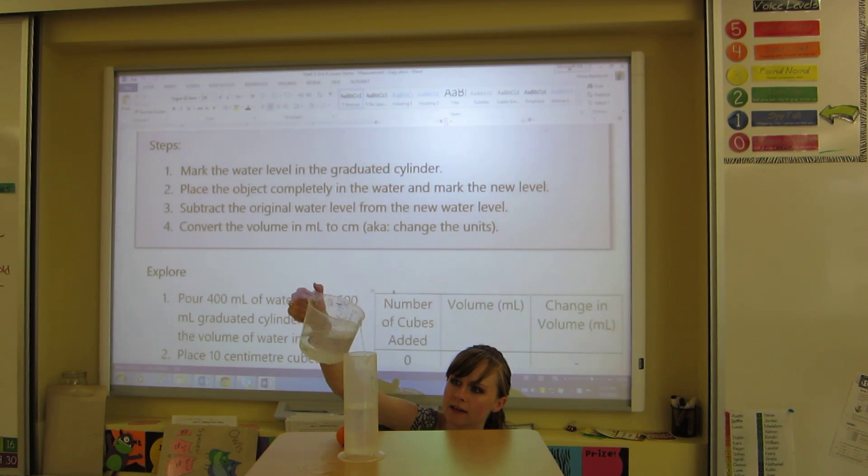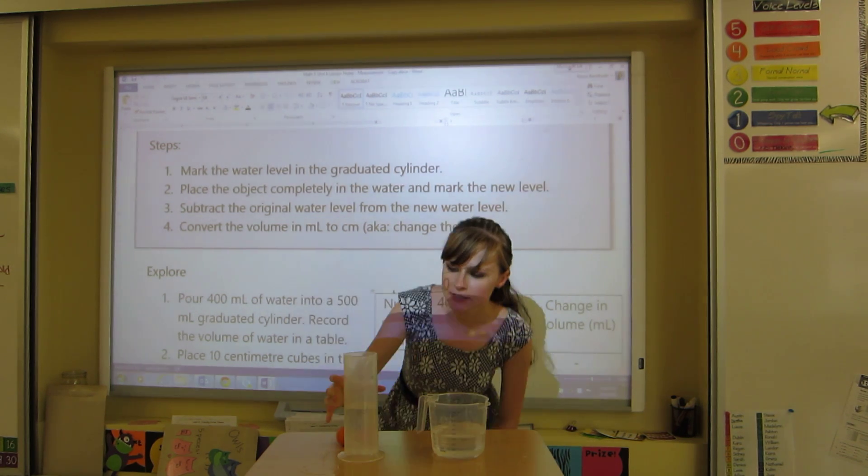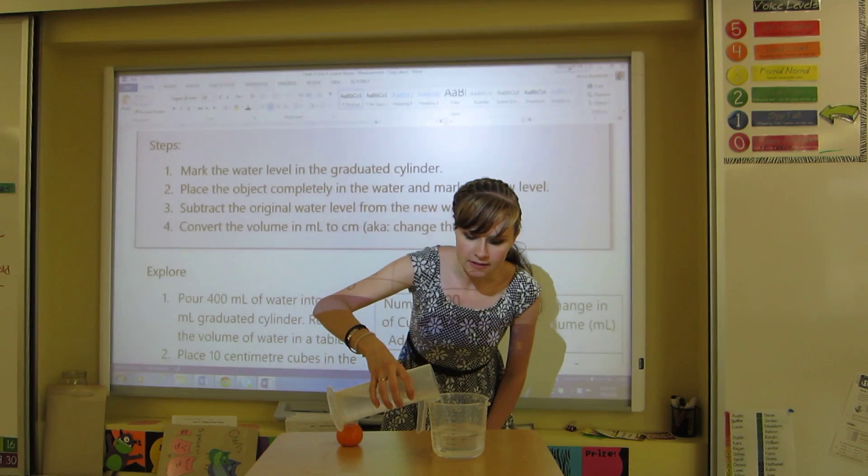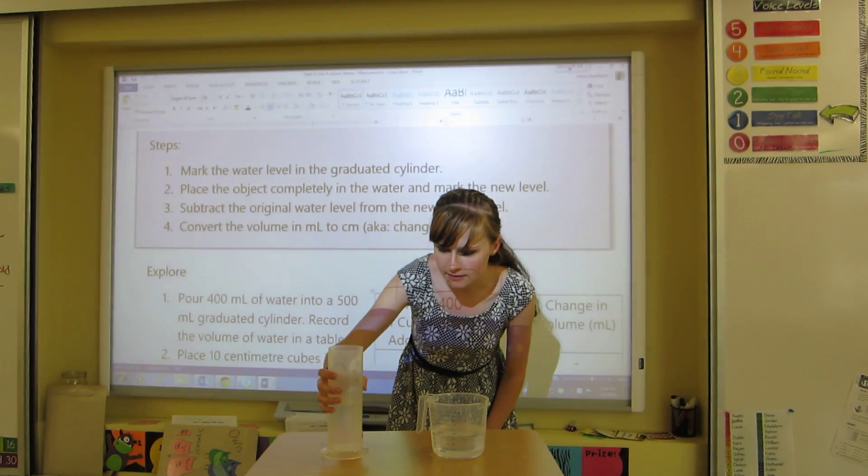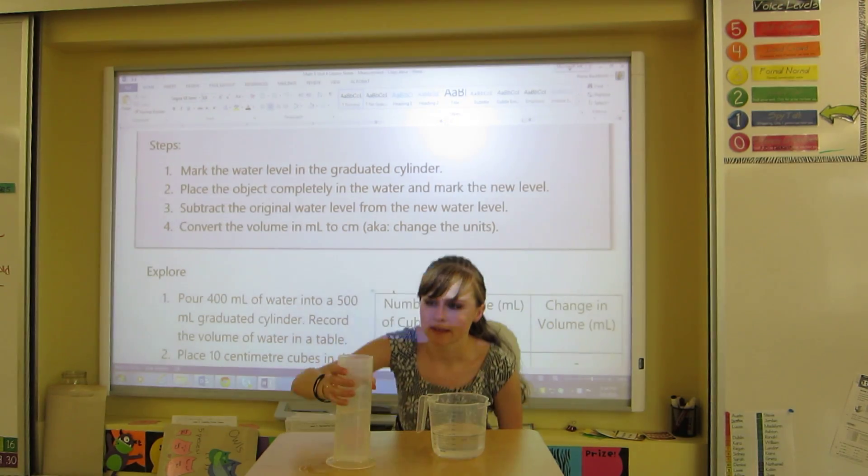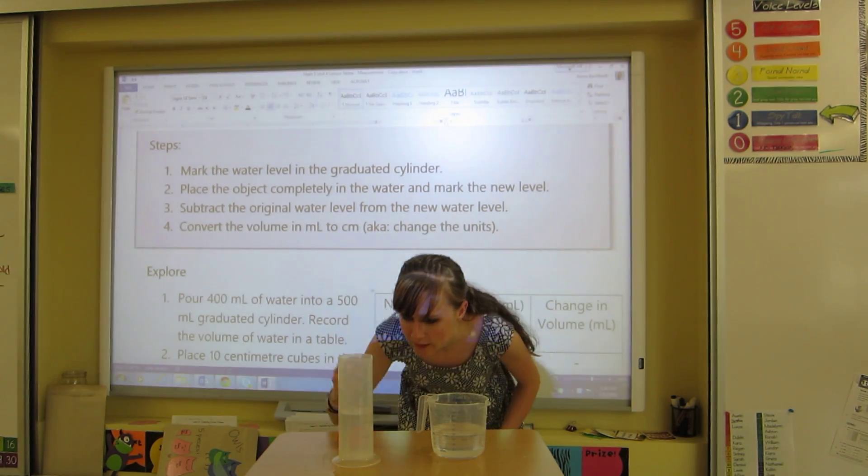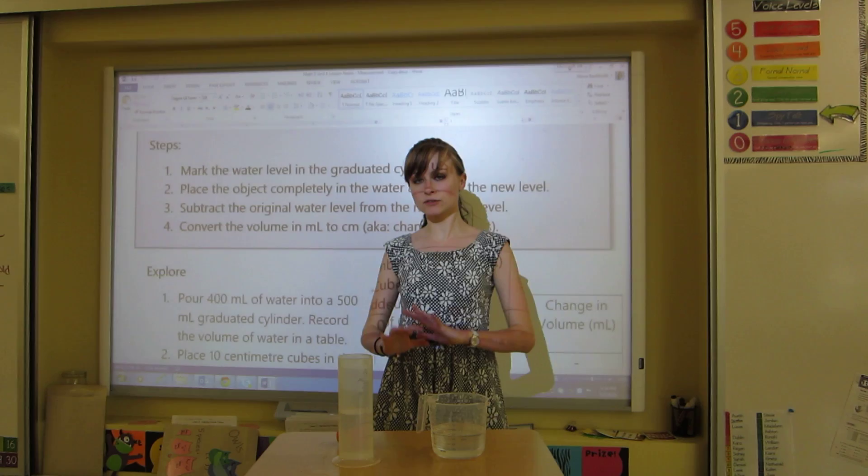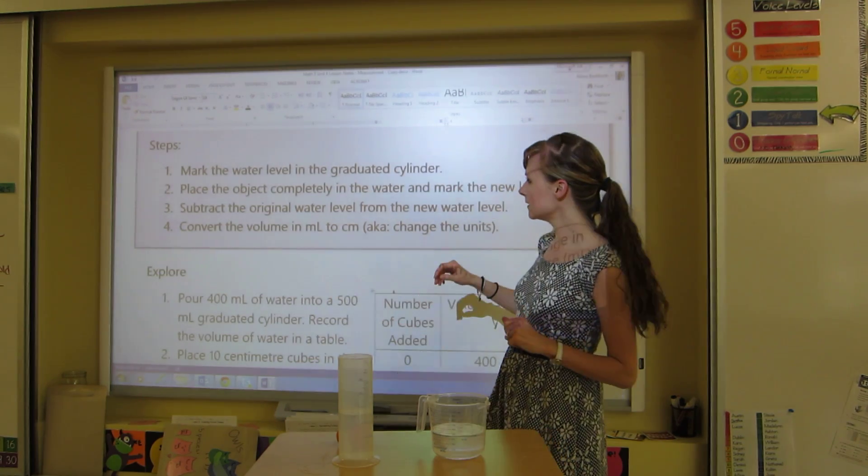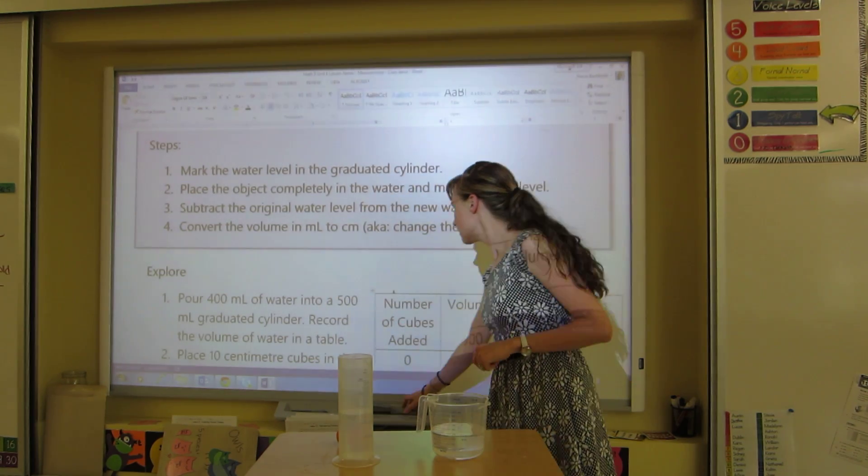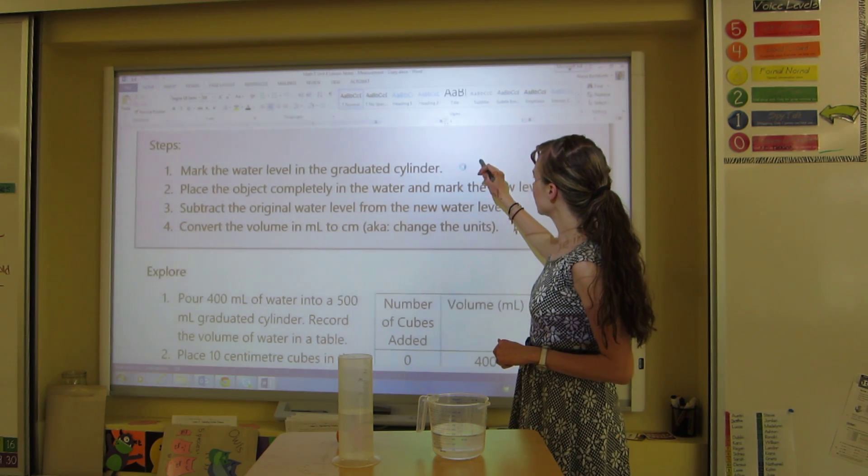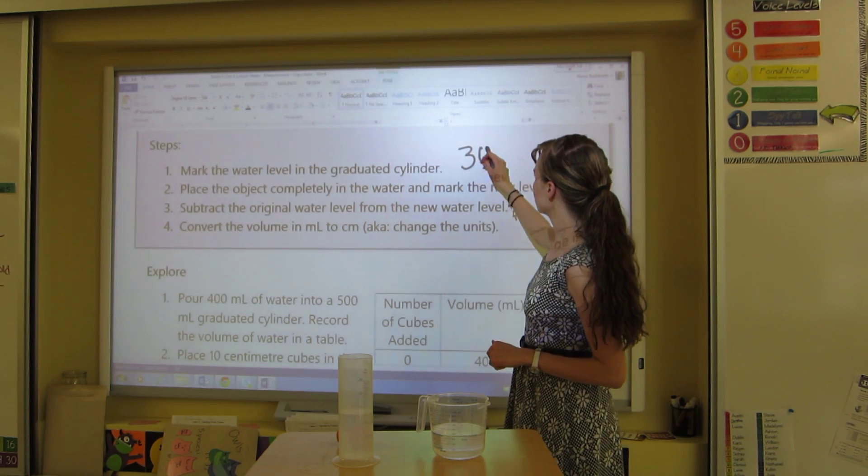You want to get down to eye level with it. Oh, I poured too much in there, and I want to get exactly 300 so that I have easy calculations. So we're going to pour out until we have exactly 300. Okay, so I have exactly 300. So mark the water level, which is, in my case, 300.